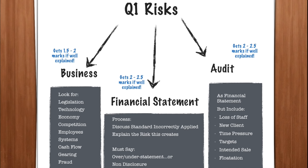With audit risk, two to two and a half marks if well explained — think of them as similar to financial statement risks. It could be IFRS inappropriately applied leading to an over or understatement or non-disclosure. But it also includes those other aspects that increase the risk of misstatement: loss of staff, new client, time pressure, targets, sale, flotation — all of those. You will see these come up time and time again. If you go back through the past paper questions, all of these areas are heavily examined. It's fundamental that you understand it.